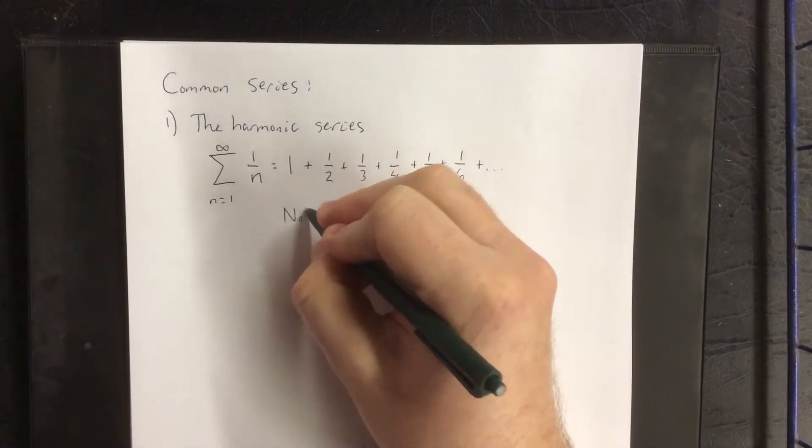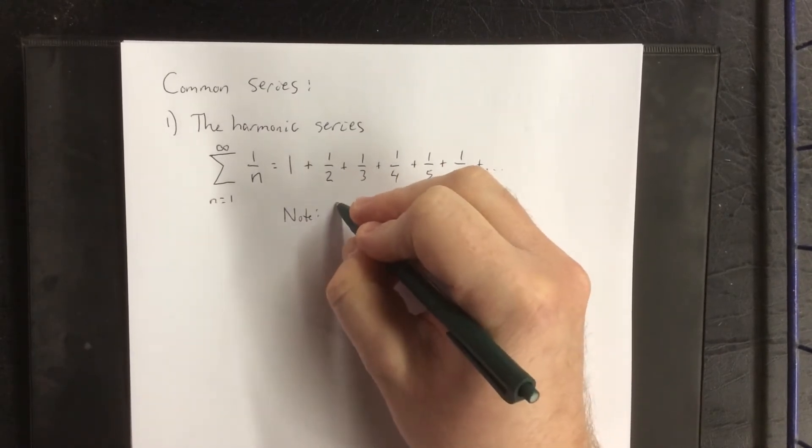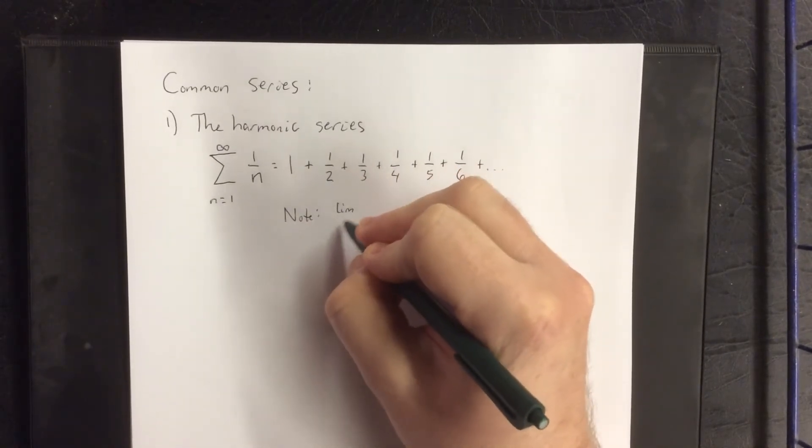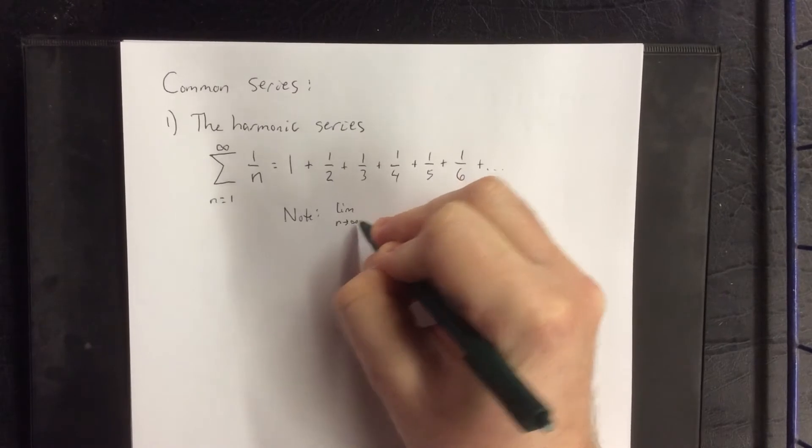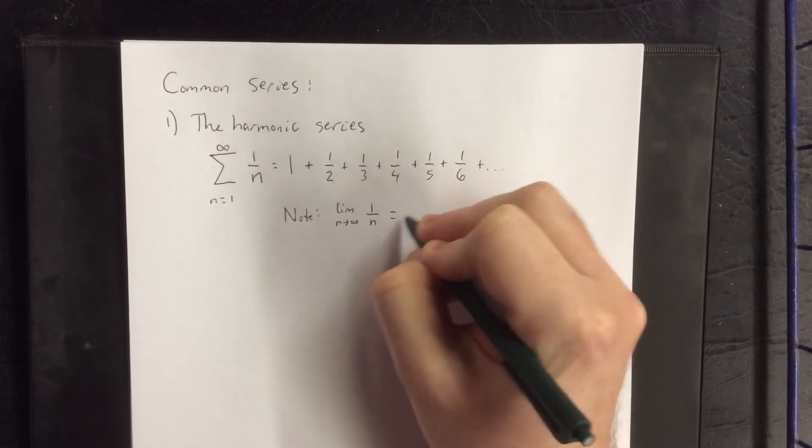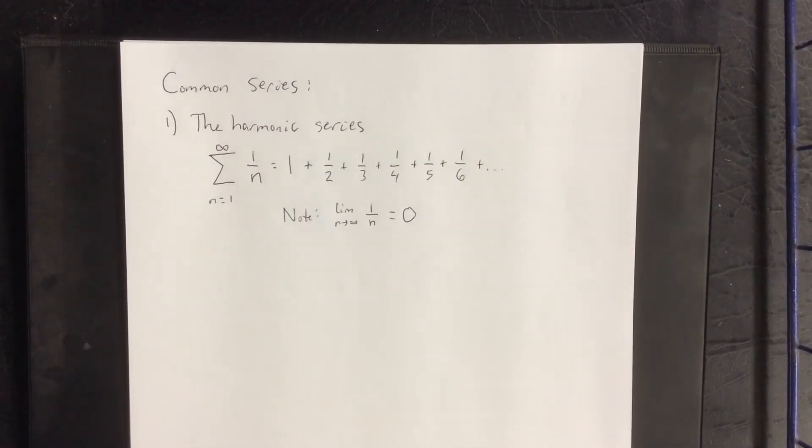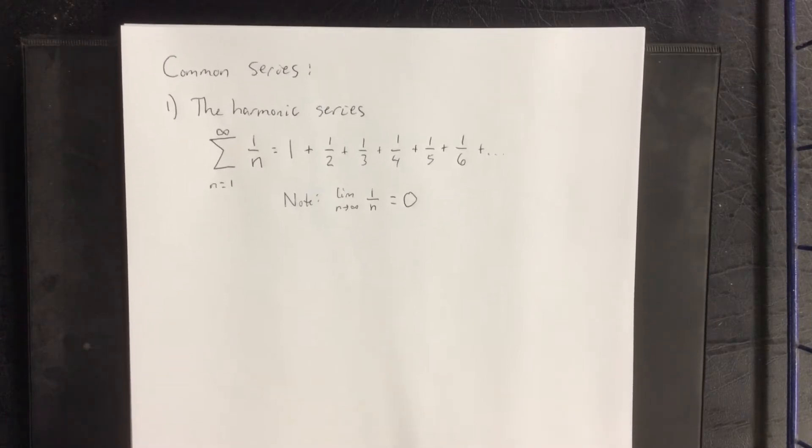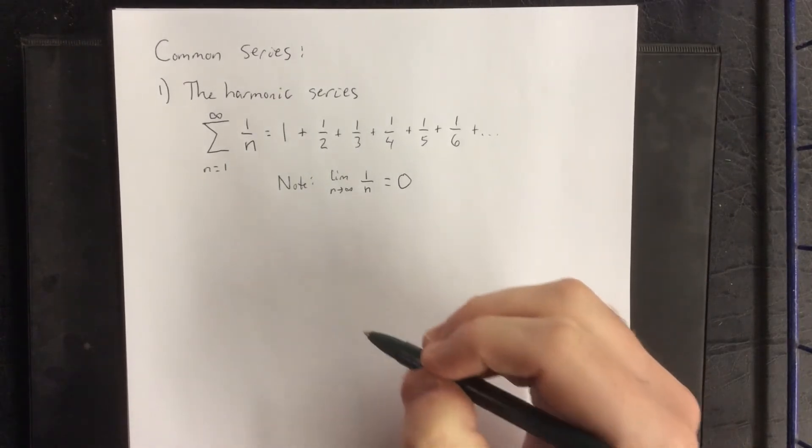So first thing to take note of here is that the sequence associated with this, the sequence 1 over n, does in fact converge to 0. Unfortunately, that's not sufficient to make a deduction about whether or not the harmonic series actually converges or diverges. We're going to use a slightly different test.